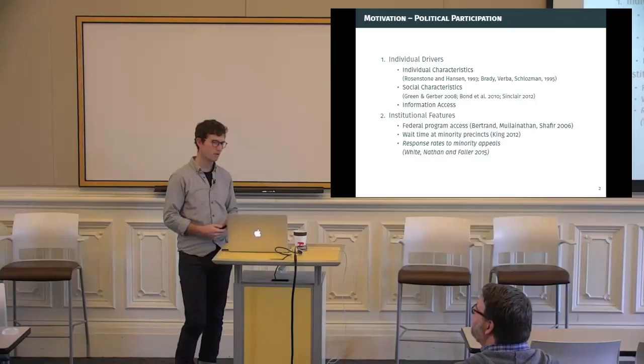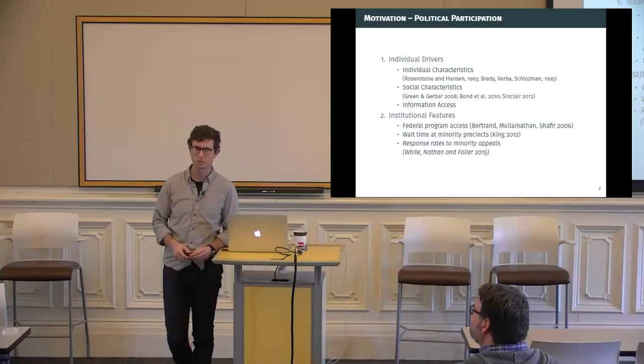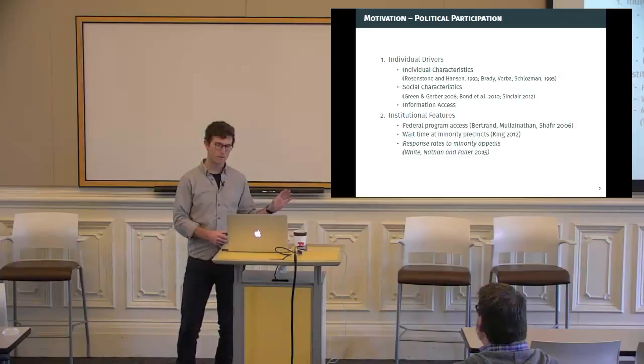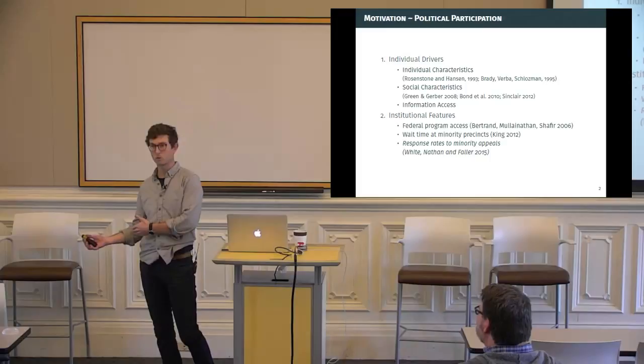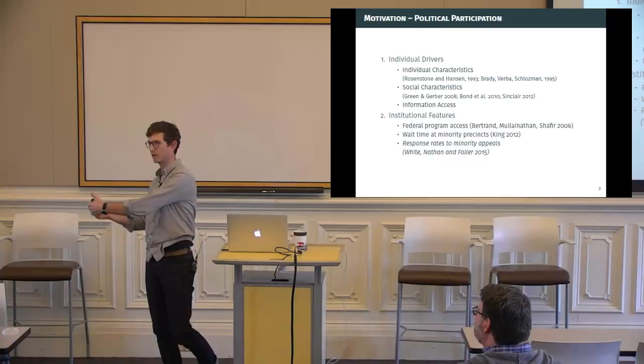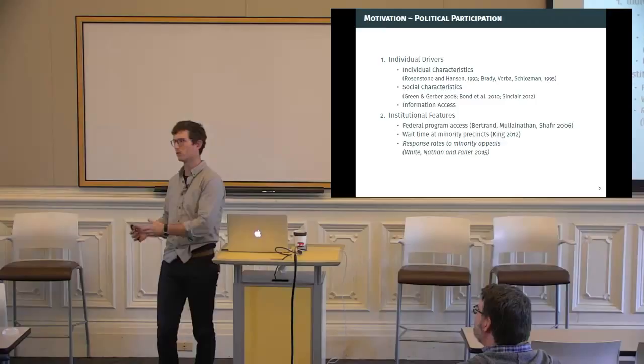There's also evidence, a lot of evidence, that individual characteristics or individual group identity shapes institutional access. So here, a federal program access like Social Security, as well as wait time in minority precincts. These are voting precincts in the 2010 election. In precincts which have greater proportion of minority voters, the resource allocation is lower, generating longer wait times compared to generally whiter precincts.